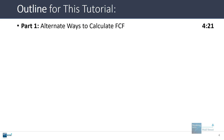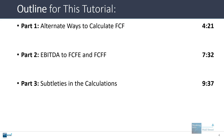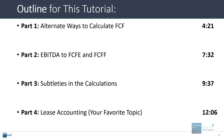First, we'll talk about different ways to calculate free cash flow in general. Then we'll cover how to go from EBITDA to free cash flow to equity and free cash flow to firm — also known as levered and unlevered free cash flow. We'll talk about some subtleties in the calculation that a lot of other tutorials gloss over. And then we'll talk about lease accounting, which I know is everyone's favorite topic — I'm being sarcastic — and explain how it differs under US GAAP and IFRS.